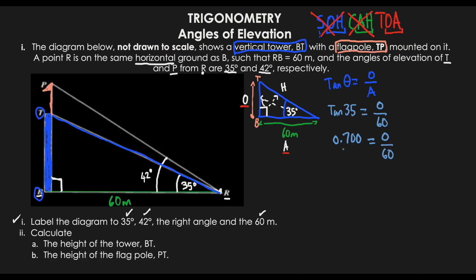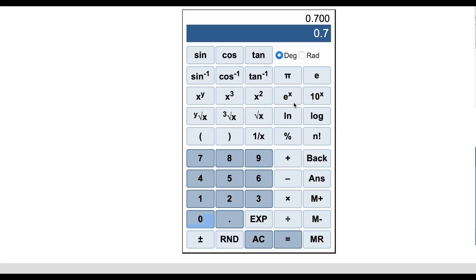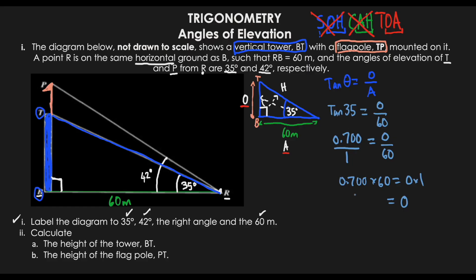To solve, I put 0.700 as a fraction over 1, then cross multiply: 0.700 times 60 equals opposite times 1. So the opposite equals 0.700 × 60 = 42. Therefore the height of tower BT is 42 meters.